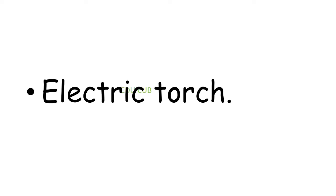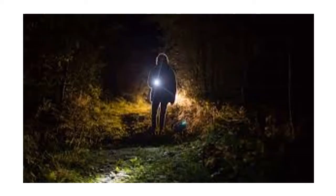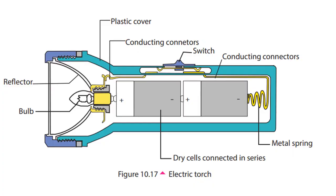Let's start with the electric torch. An electric torch is an essential equipment when we are going in the dark at night or when we are searching for something in the dark. There are electric torches with only one dry cell or with several dry cells connected in series. Here you can see the parts of an electric torch: reflector, bulb, plastic cover, connecting connectors, metal spring, and dry cells.